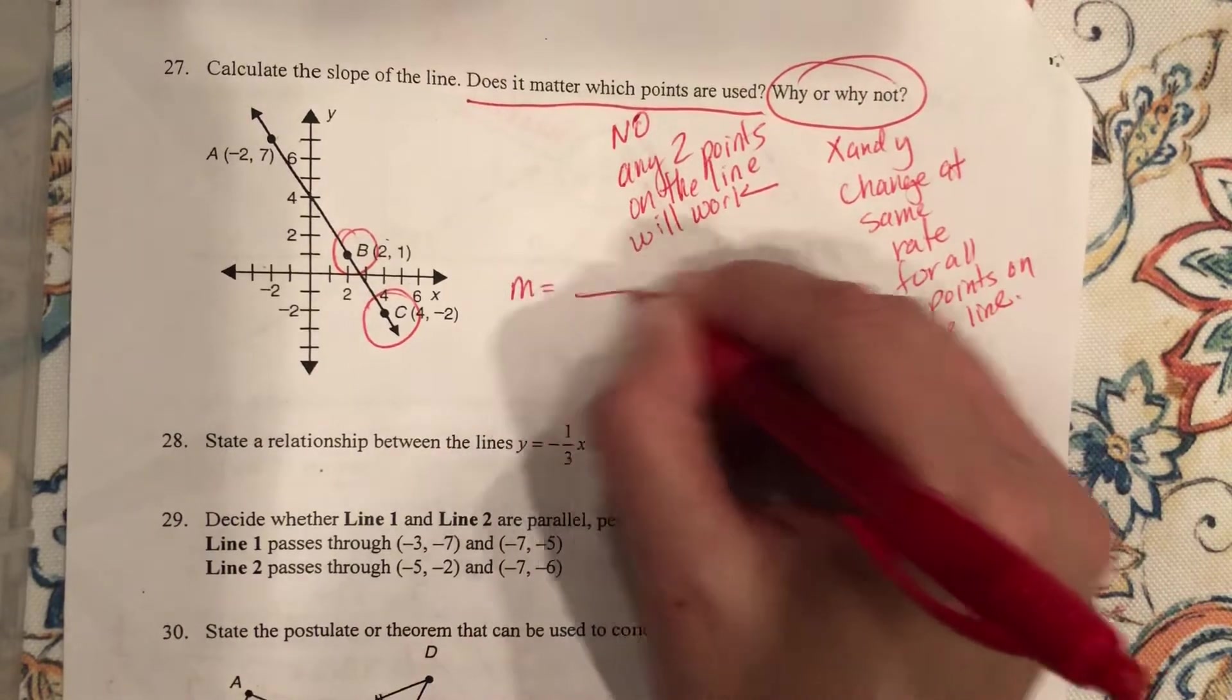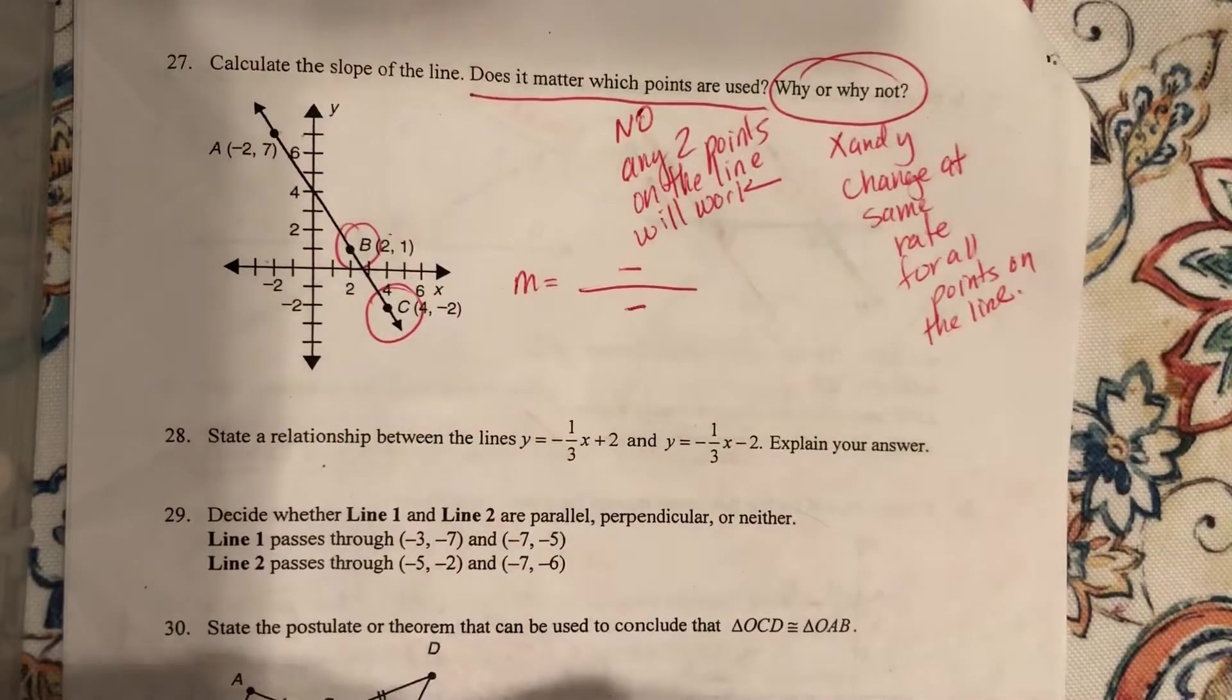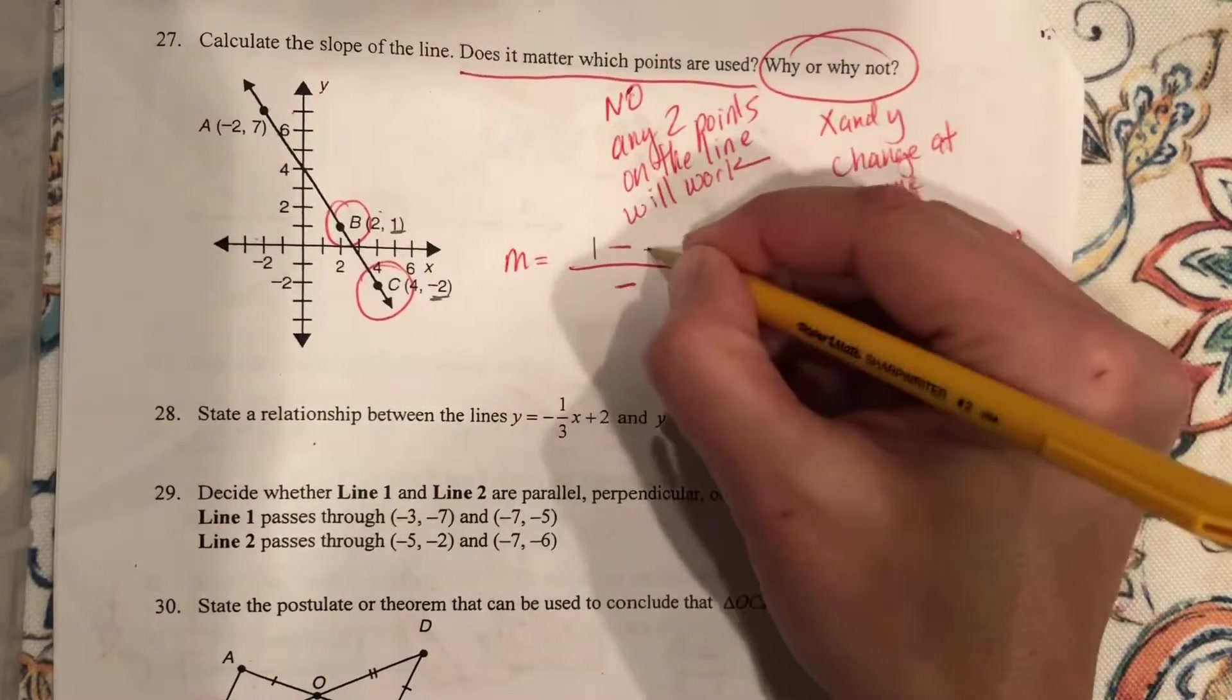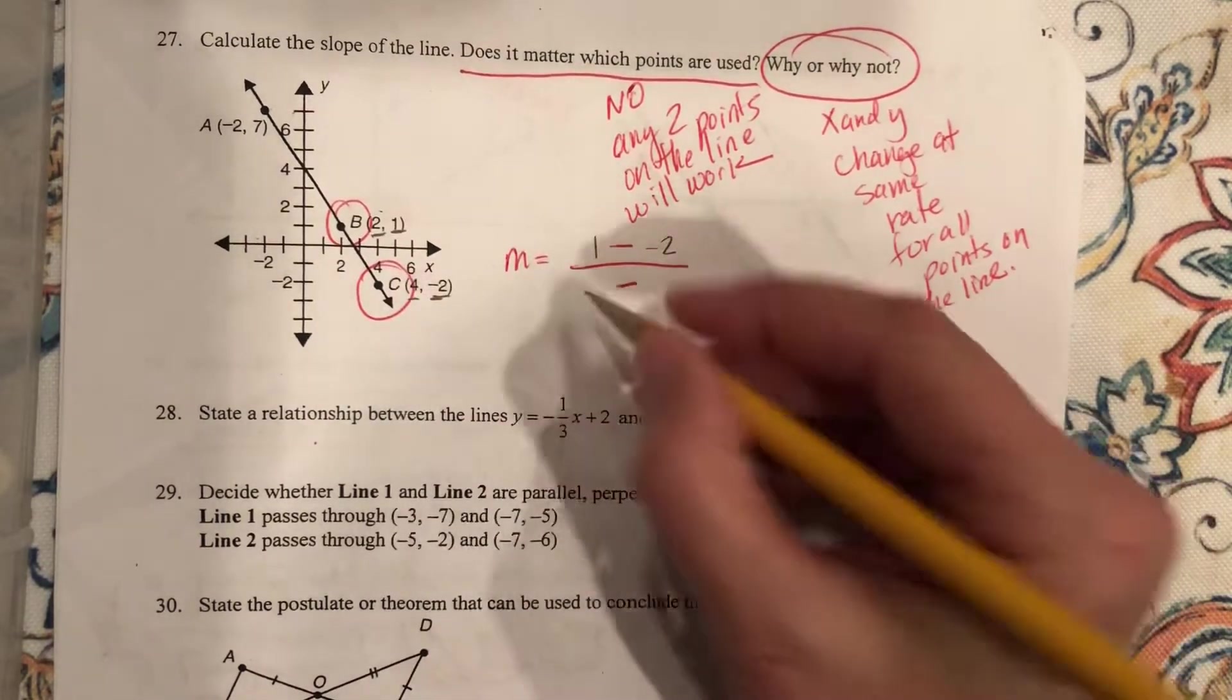So, remember your slope formula is your change in Y over your change in X. So let's look at my two Y coordinates this time on top. Y, 1, and negative 2. You've got to stay in the same order. So my two X's are 2 and 4.